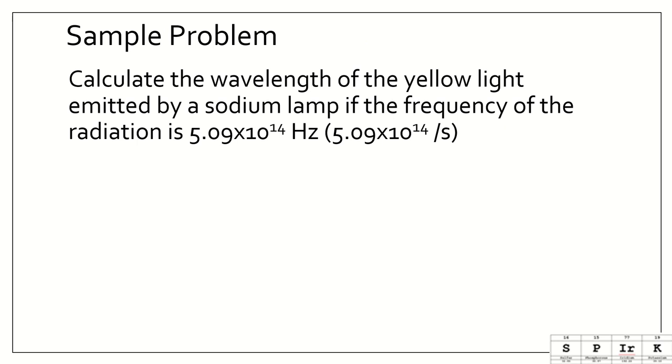Let's look at a sample problem. Let's calculate the wavelength of yellow light that's emitted by a sodium lamp if the frequency of radiation is 5.09 times 10 to the 14th hertz. Our equation is C equals lambda nu. Let's fix that there. C equals lambda nu. So, we are solving for the wavelength. So, let's algebraically rearrange this. To get lambda alone, we need to divide both sides by nu. So, our equation is lambda equals C over nu.